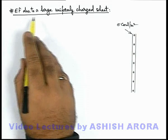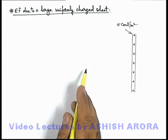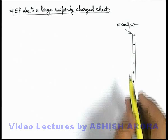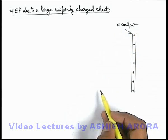Let's discuss the electric field due to a large uniformly charged sheet by using Gauss's Law. Say if this is a large uniformly charged sheet which is having a charge per unit area on the surface, sigma coulomb per meter square.